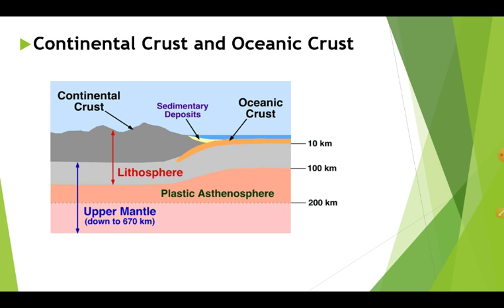First, what is continental crust? Continental crust is made up of rocks. Those rocks are different in size, shape and color.